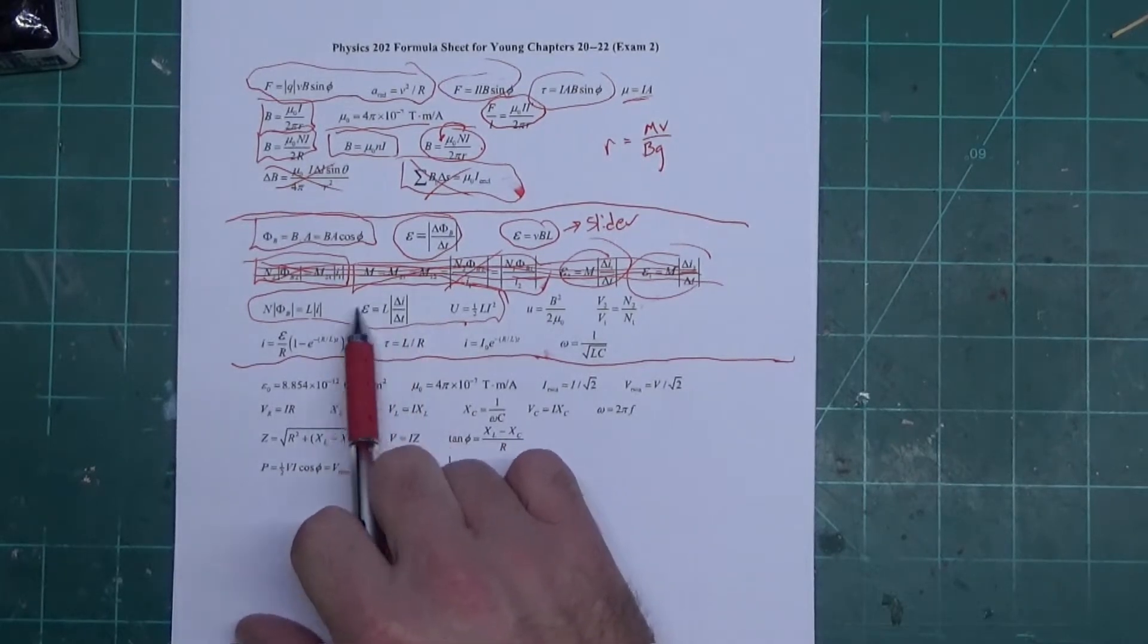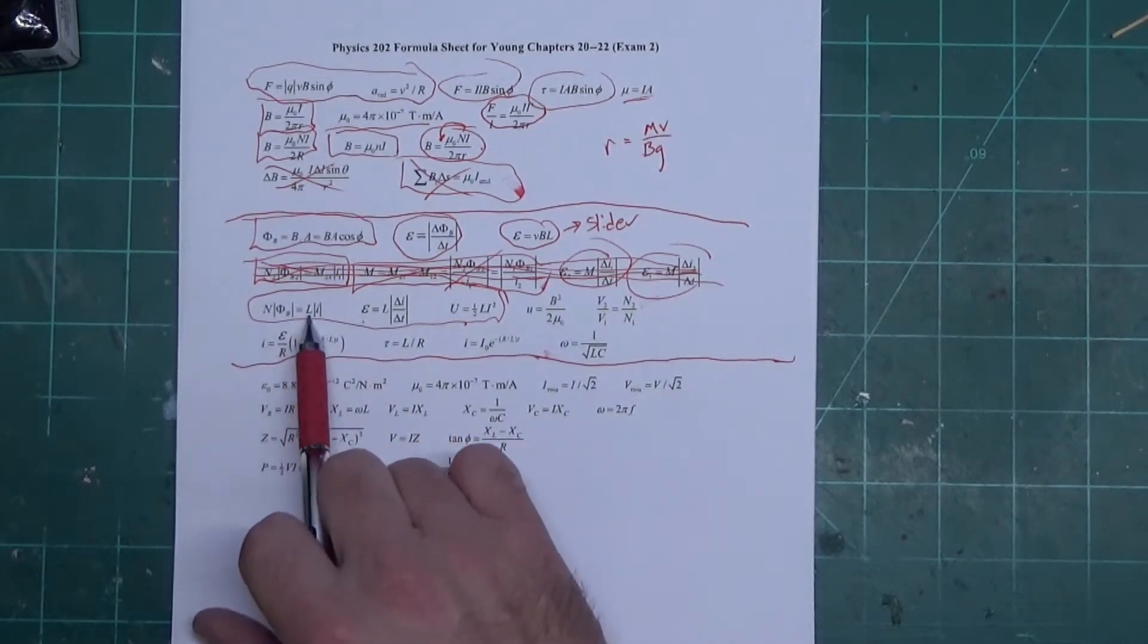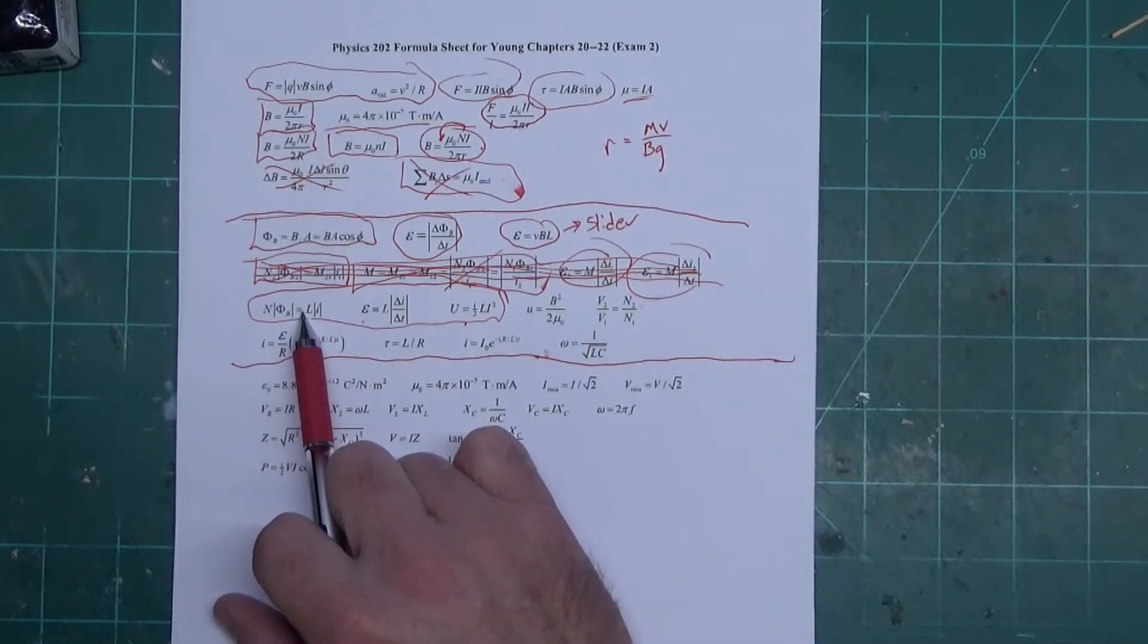This is emf in an inductor due to the changing current, and this is the equation for calculating the inductance from it. We're missing an equation for it - it's too involved. I don't remember it. It's like mu naught n squared L I, something like that.